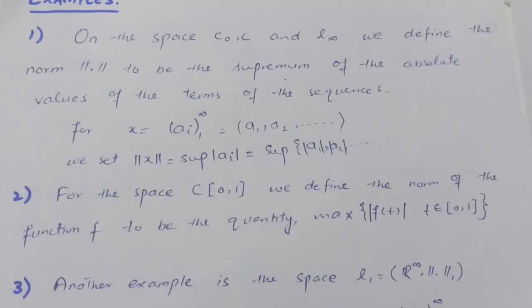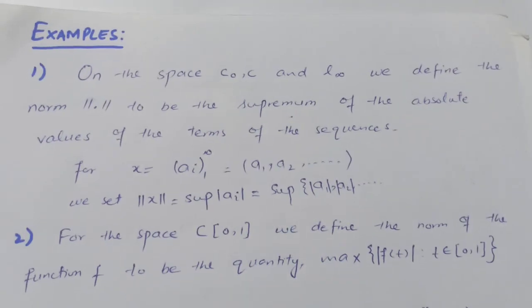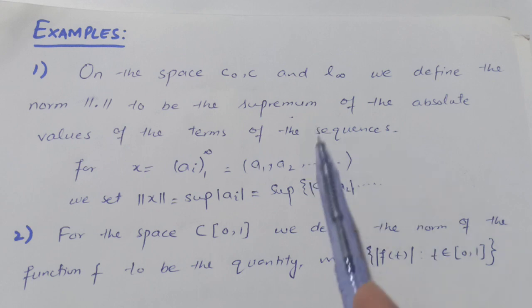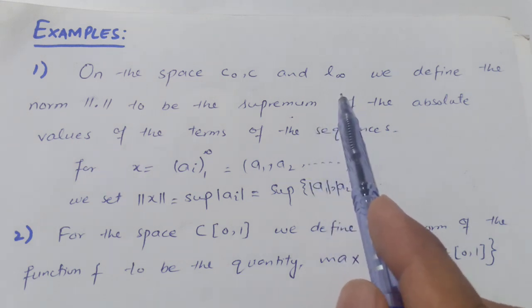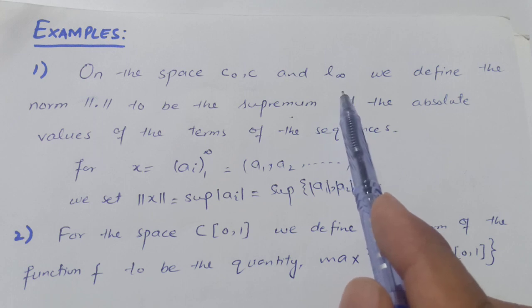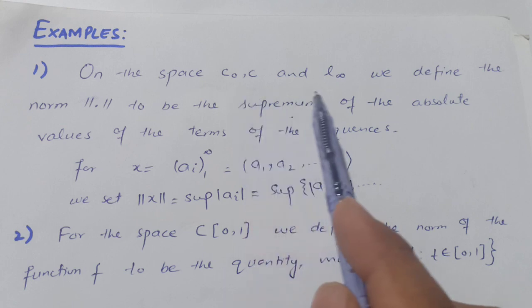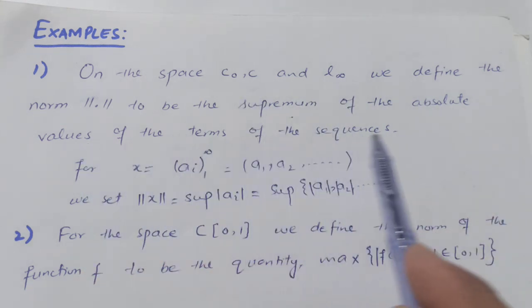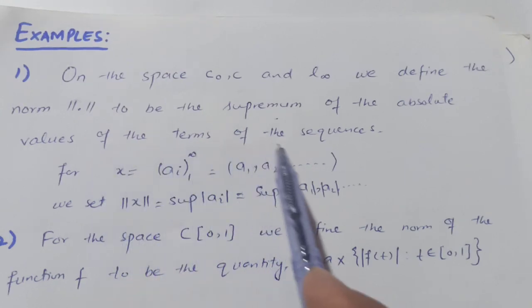Next we have examples of normed spaces. The space c₀ is the set of sequences converging to 0, c is the set of all convergent sequences, and l∞ is the set of all bounded sequences. On these three spaces, we define the norm to be the supremum of the absolute values of the terms of the sequence.